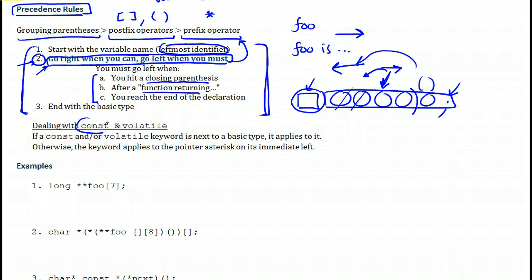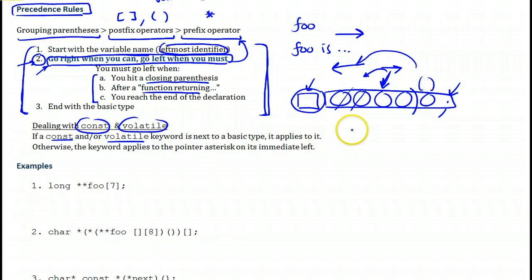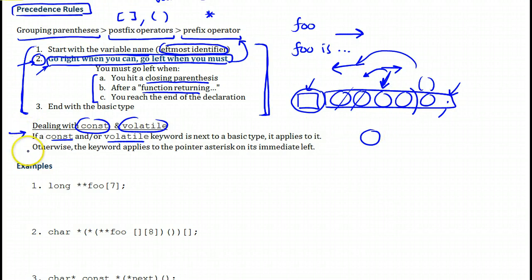In terms of dealing with const and volatile: once you encounter them, if they are next to a basic type — such as int, short, etc. — either before or after it, then const or volatile will apply to the type itself, to the basic type. Otherwise, they will apply to the pointer immediately to the left of const or volatile. We will see this in practice.